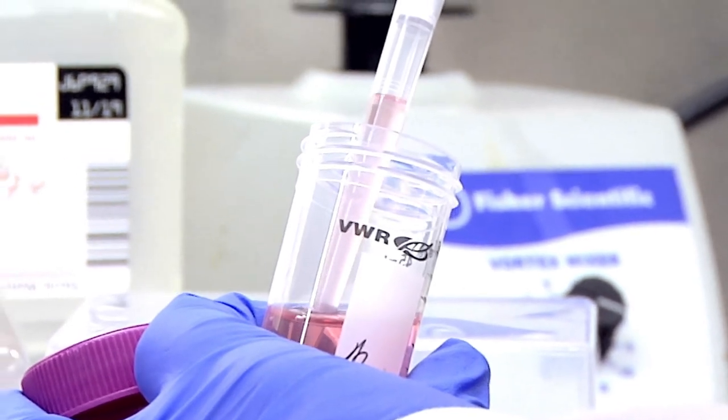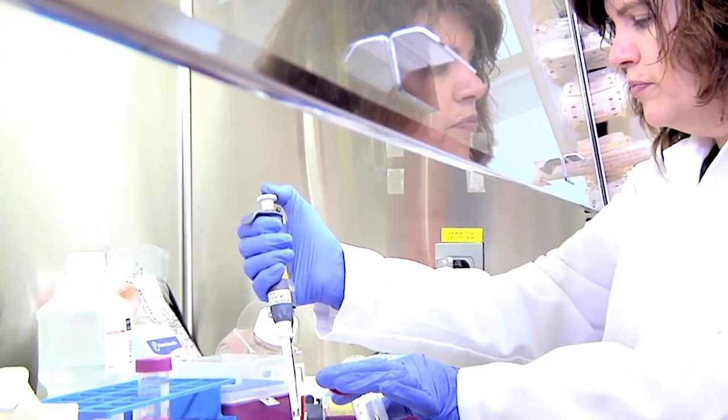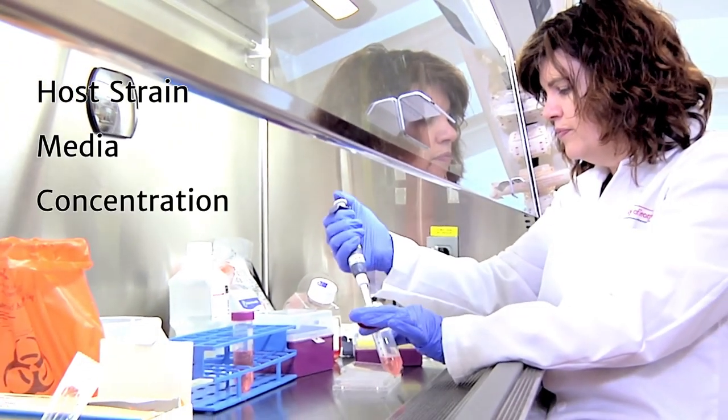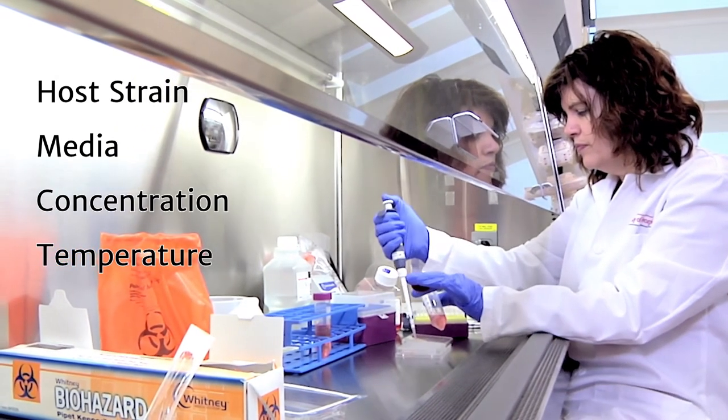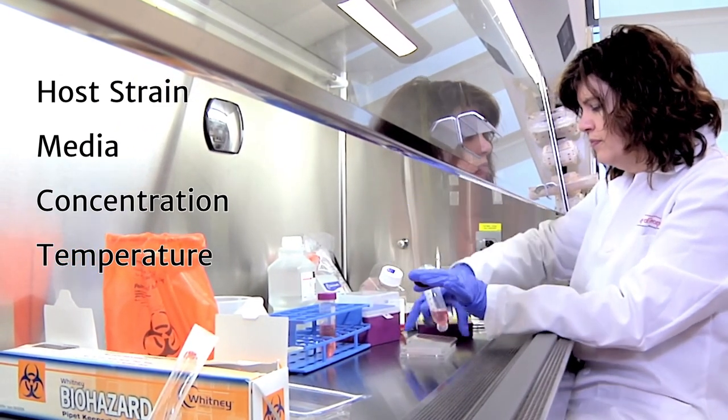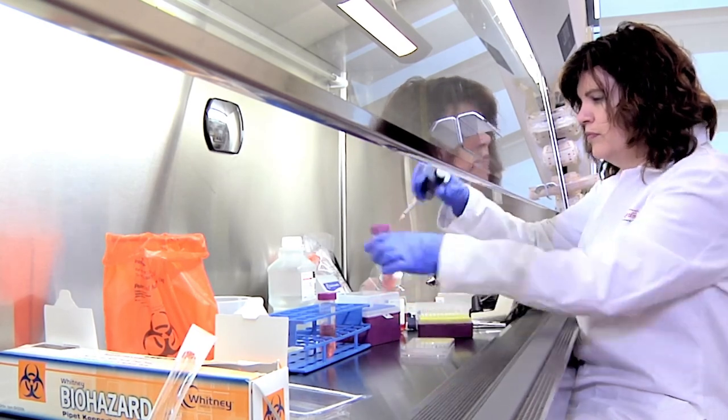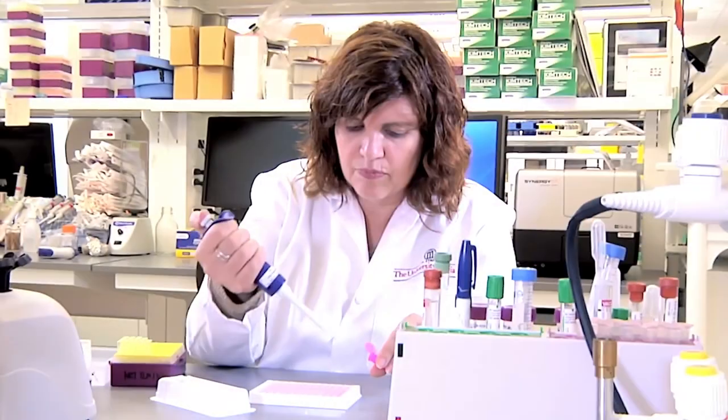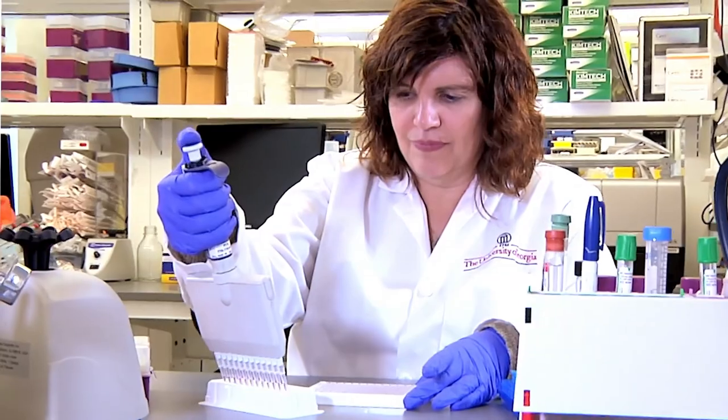There are a wide range of conditions that can affect protein expression. Examples of these include the host strain, media the cells are grown in, inducer concentration, and temperature at which the bacterial culture is maintained after the inducer has been added. We will be discussing how to evaluate different conditions in later videos, but for now it is important to understand that a large number of experiments may be necessary to find the best conditions for expression of a particular protein.